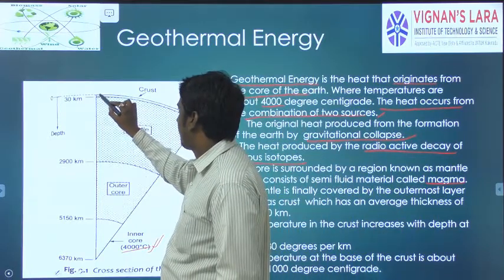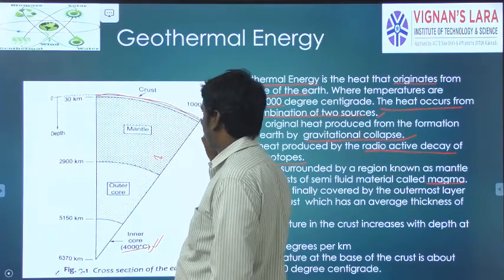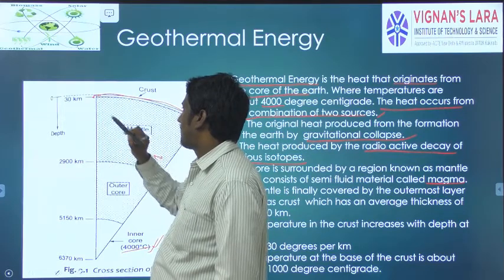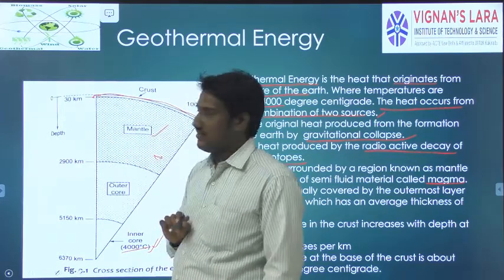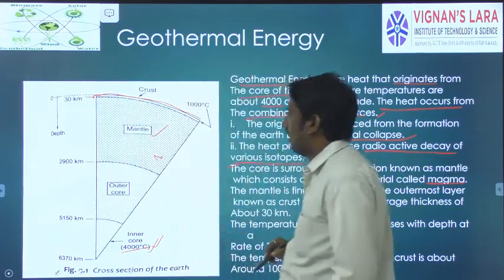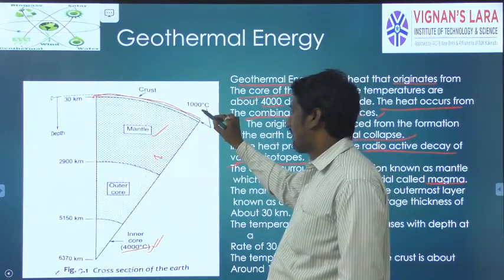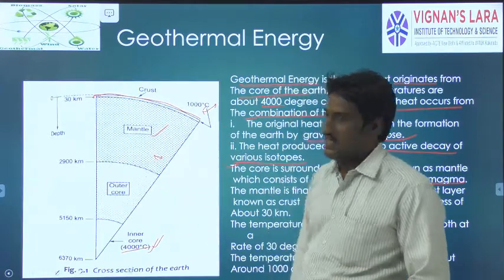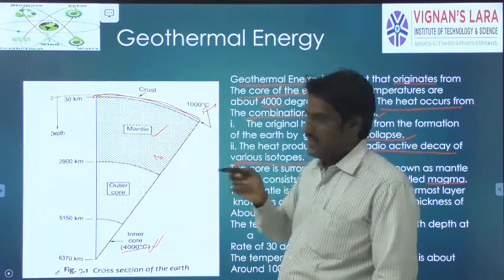The surface of the earth is called the crust. After 30 kilometers from the surface of the earth, the mantle region begins. In the mantle region, the temperature is around 1000 degrees centigrade, as you can observe in the diagram.